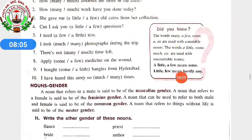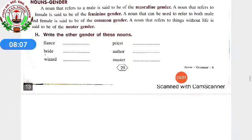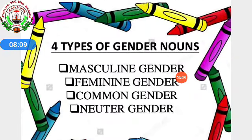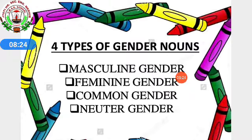Now, nouns — gender. Types of gender nouns: how many types are there? Masculine, feminine, common, and neuter gender. There are four types of gender nouns: masculine gender, feminine gender, common gender, and neuter gender.